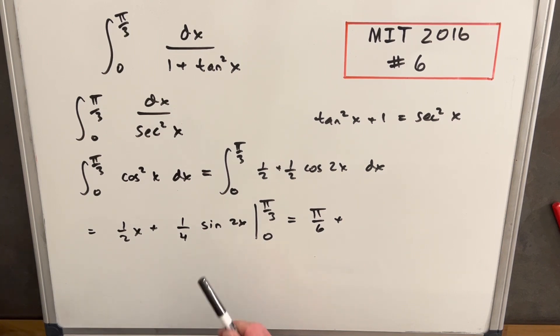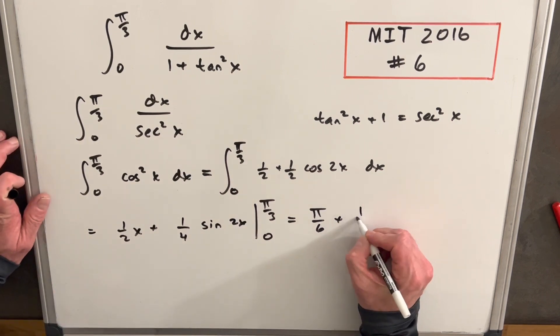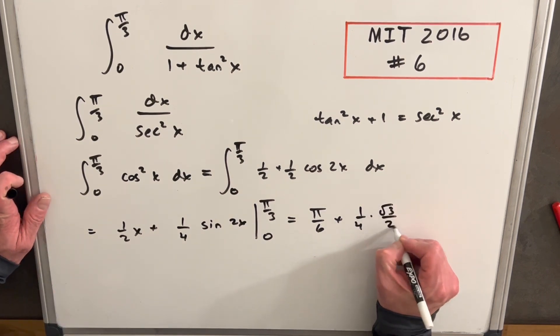Sine at 2 pi over three is square root of three over two. So we're going to have one-fourth times square root of three over two.